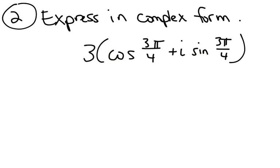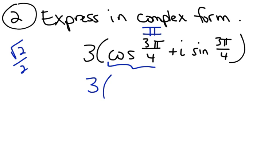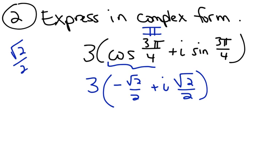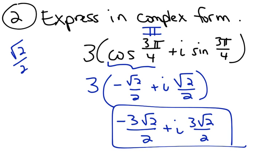What if I wanted to go the other direction and express a polar coordinate in complex form? The easiest way is to just evaluate the cosine and sine. The cosine of 3 pi over 4 — anything pi over 4 for both sine and cosine is square root of 2 over 2 — but it depends on the quadrant. 3 pi over 4 is in quadrant 2, where cosines are negative, so it's negative square root of 2 over 2 plus i times square root of 2 over 2 (sine is positive in quadrant 2). Then distribute to find the complex form of 3 cosine of 3 pi over 4 plus i sine of 3 pi over 4.